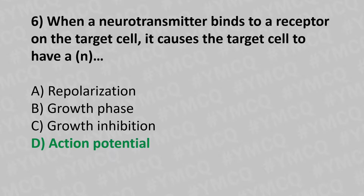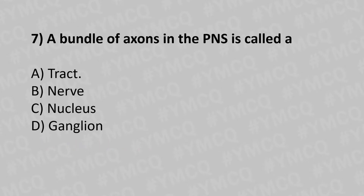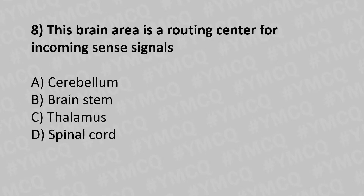Moving to our seventh question. A bundle of axons in the PNS is called a: Option A: tract. Option B: nerve. Option C: nucleus. Option D: ganglion. And the answer is option B: nerve.